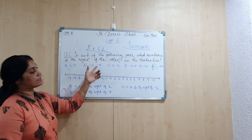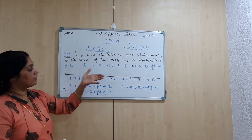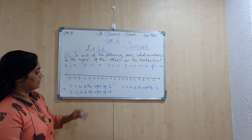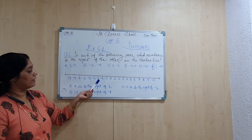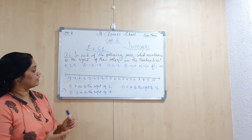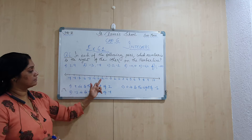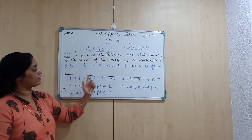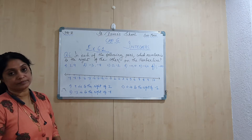Next is minus 3 and minus 8. So here is minus 3 on the number line, and here is minus 8. Minus 3 is to the right of minus 8.